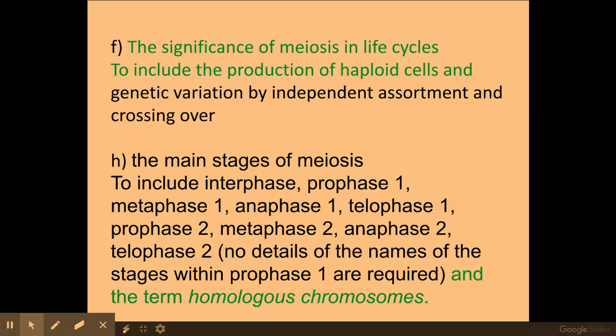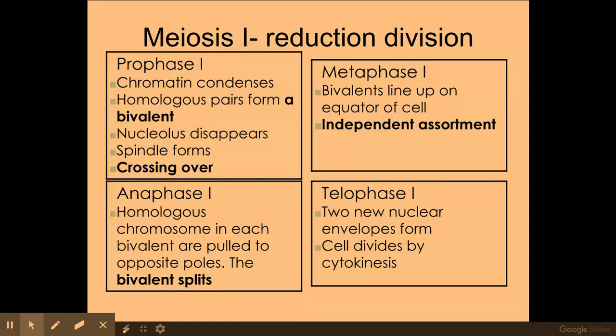So meiosis is broken up into two stages: meiosis one and meiosis two. This is the overview of meiosis one, which is the reduction division, and this is the part where the DNA content is reduced by half.